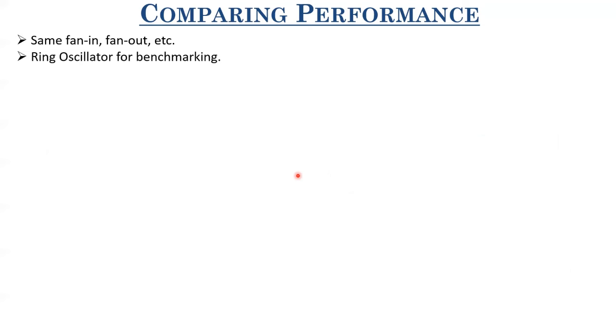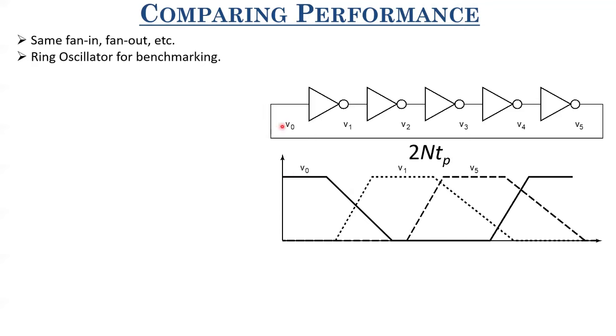To compare the performance or speed of two different technologies, we need the same fan-in, same fan-out, and uniform loading factors for both. A standard circuit used for benchmarking is the ring oscillator. A ring oscillator consists of an odd number of inverters connected in a circular fashion — for example, five inverters — where the output of the last inverter is connected to the input of the first, arranged in the form of a ring.